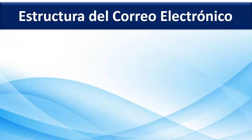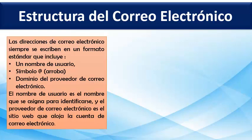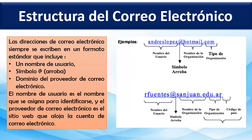A continuación veremos la estructura del correo electrónico. Es importante aprender a escribir direcciones de correo electrónico correctamente; de lo contrario, pueden ser entregados a una persona equivocada o no ser enviados. Las direcciones de correo electrónico siempre se escriben en un formato estándar que normalmente incluye tres elementos: el primero es un nombre de usuario, el segundo es el símbolo de arroba, el tercero es el dominio del proveedor de correo electrónico.